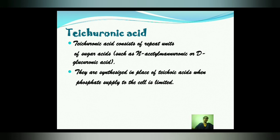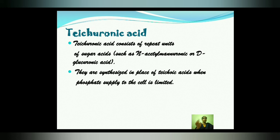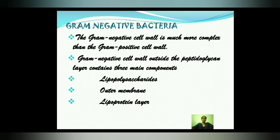Teichuronic acid consists of repeat units of sugar acids such as N-acetylmanuronic acid or D-glucuronic acid. It is synthesized in place of teichoic acids when the phosphate supply to the cell is limited. This is optional — only when phosphate supply is very limited does the cell wall synthesize teichuronic acid instead. That covers Gram-positive bacteria: peptidoglycan, teichoic acid, and teichuronic acid.